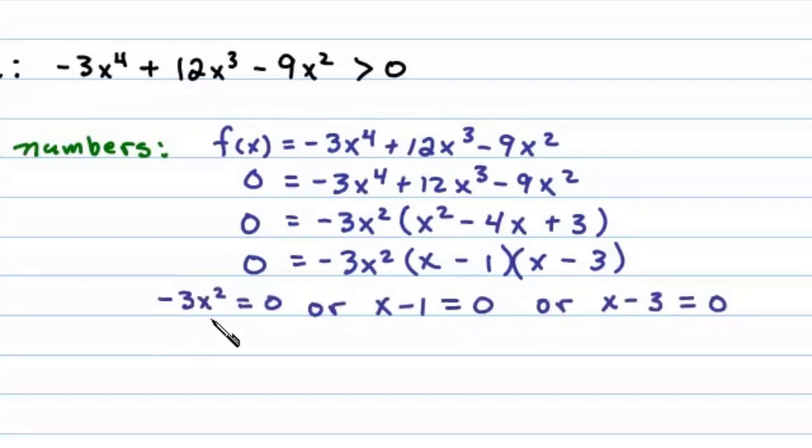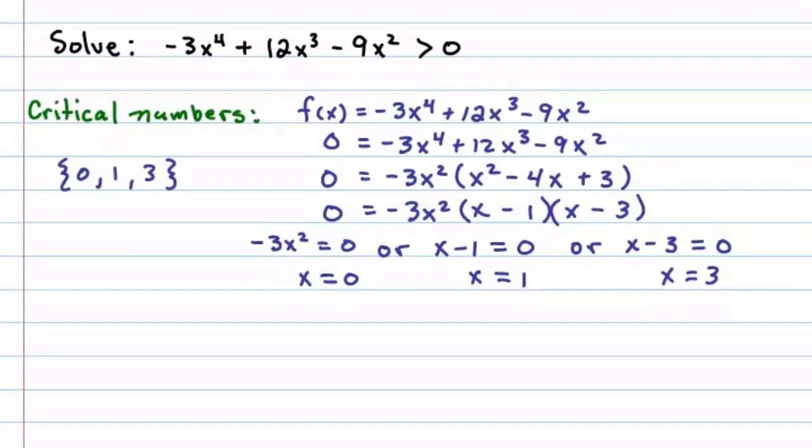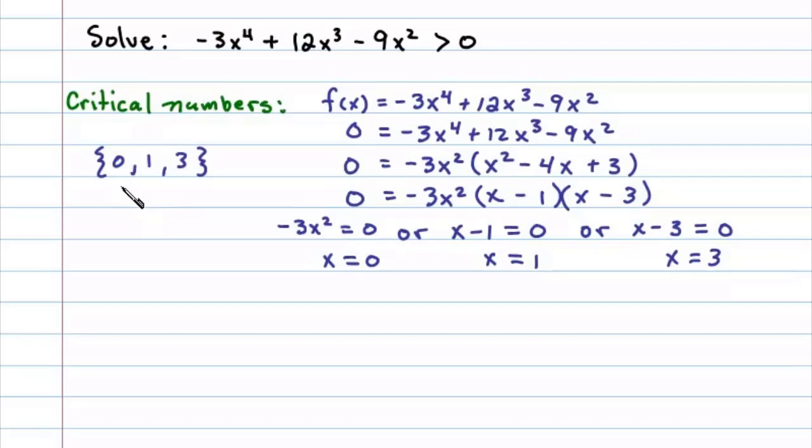So -3x² = 0 will give us a double root x = 0. x - 1 = 0 gives us the root x = 1, and x - 3 = 0 will give us the last root x = 3. So the three critical numbers are {0, 1, 3}. Next, let's construct a sign chart.